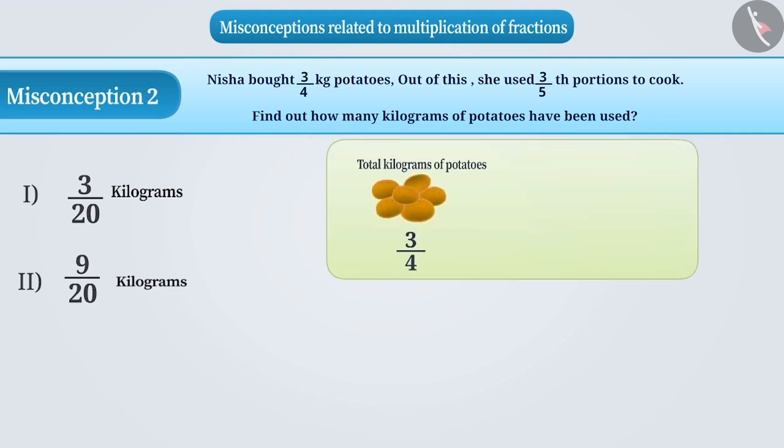Here, Nisha has used 3 fifth of 3 fourth kg of potatoes to cook. To find out how many kilograms of potatoes have been used, we have to find out how much is 3 fifth of 3 fourth kg. For this, we have to find the product 3 by 5 into 3 by 4.